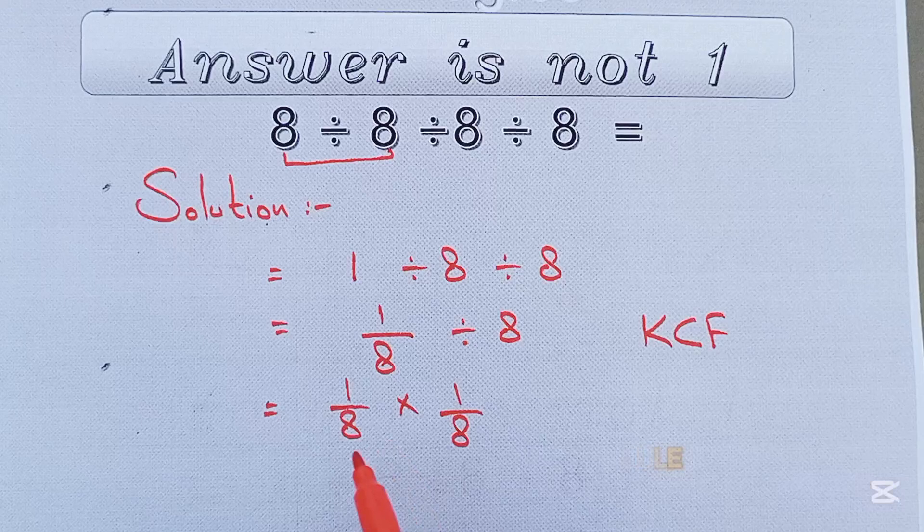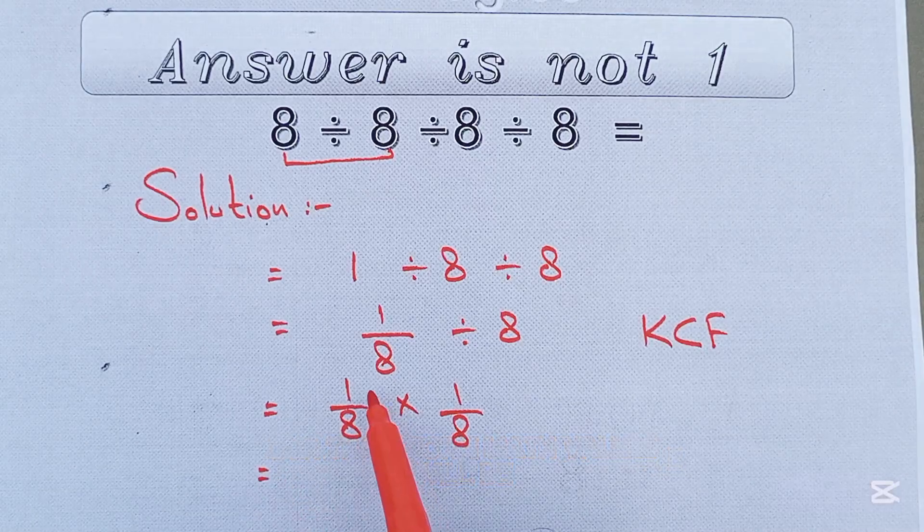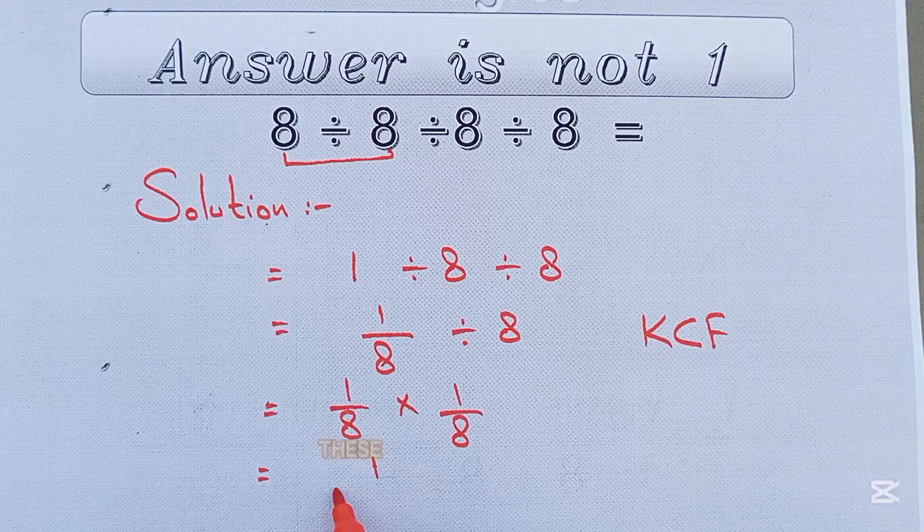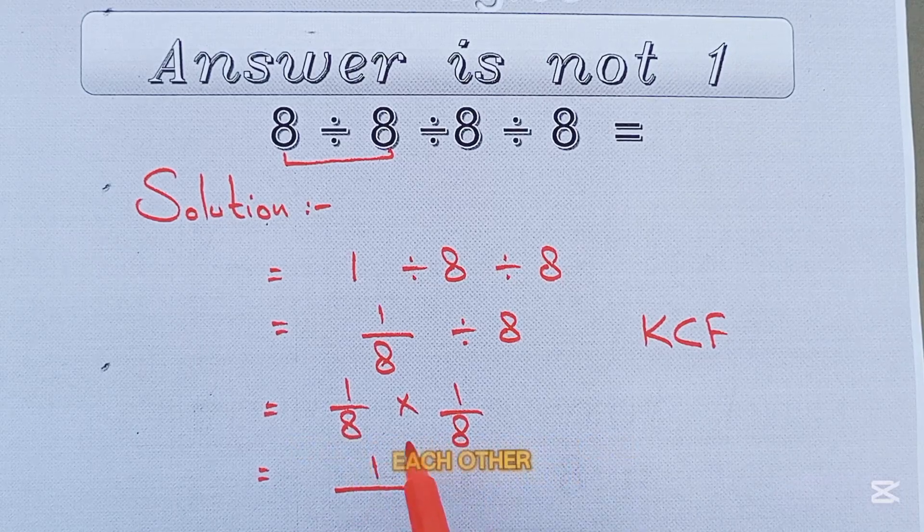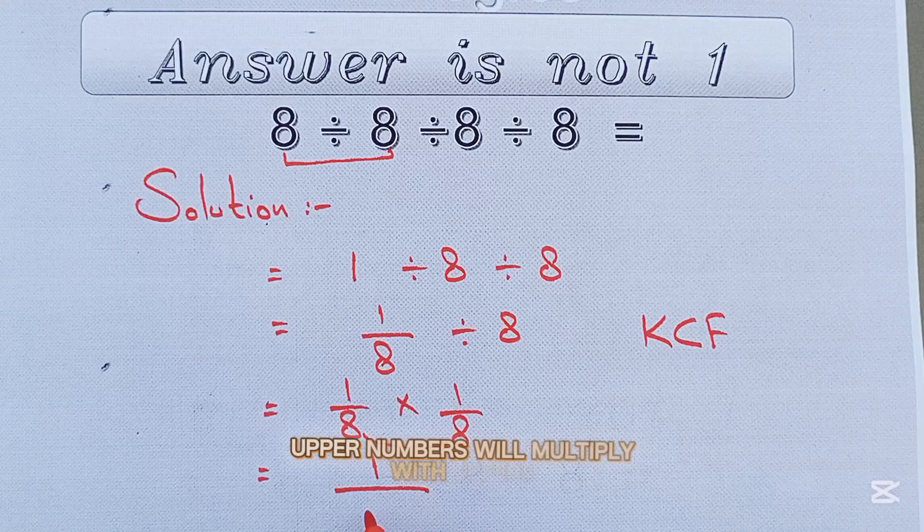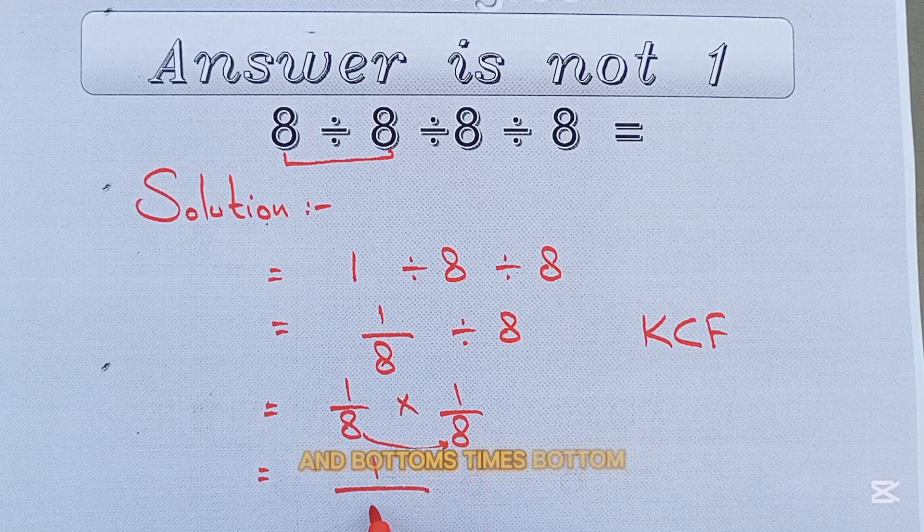After applying KCF rule, our transformed math values will be like 1 divided by 8 times 1 over 8. Now we can see these two fractions are multiplying with each other. And we know, whenever two fractions are multiplying, upper numbers will multiply with uppers and bottoms times bottoms.